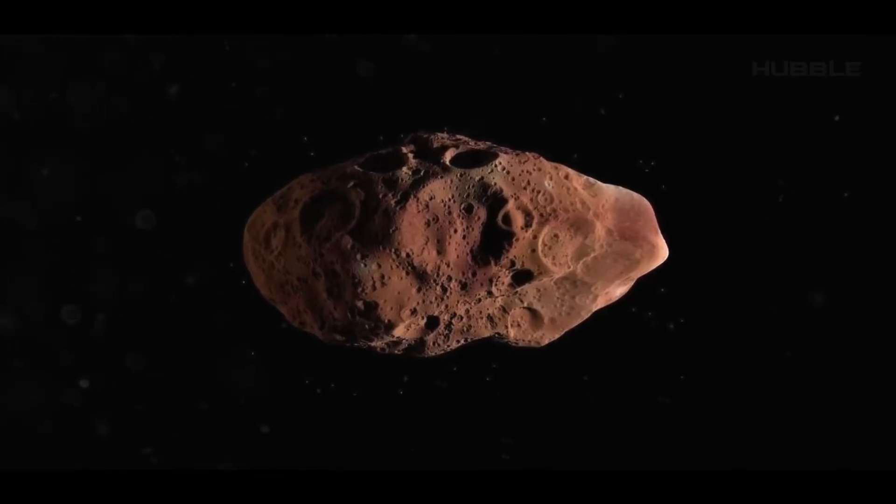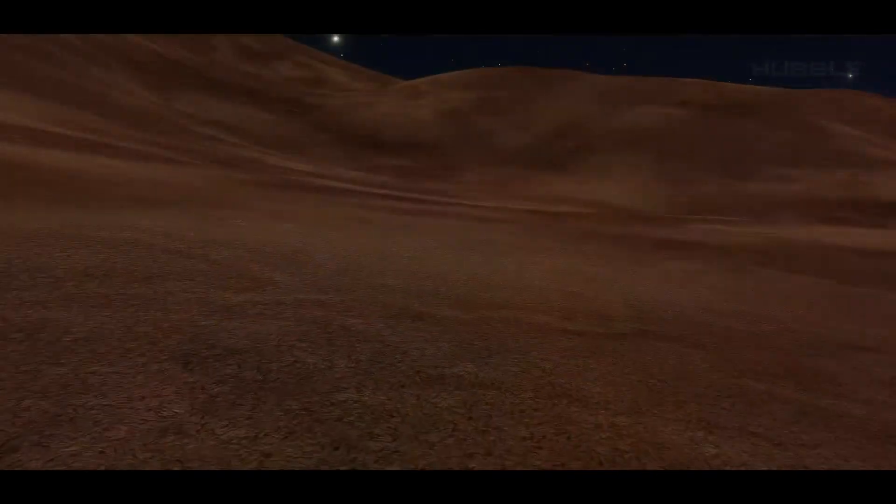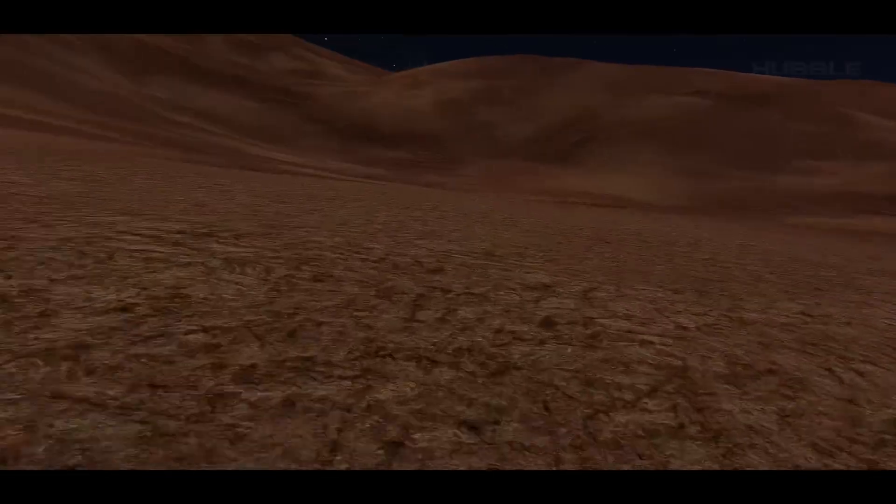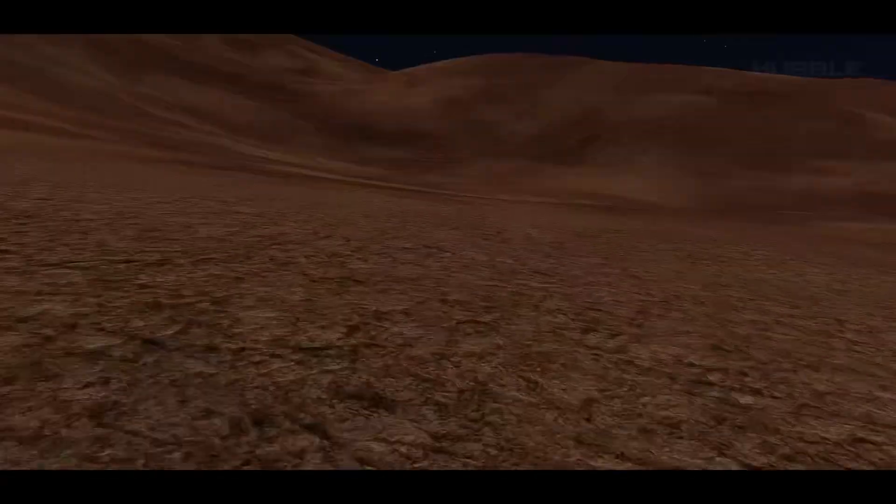At the same time, this moon, which is about the size of Liechtenstein, has a unique landscape: mountains, valleys, hills, ravines, and even meteorite craters, of which there are many here.